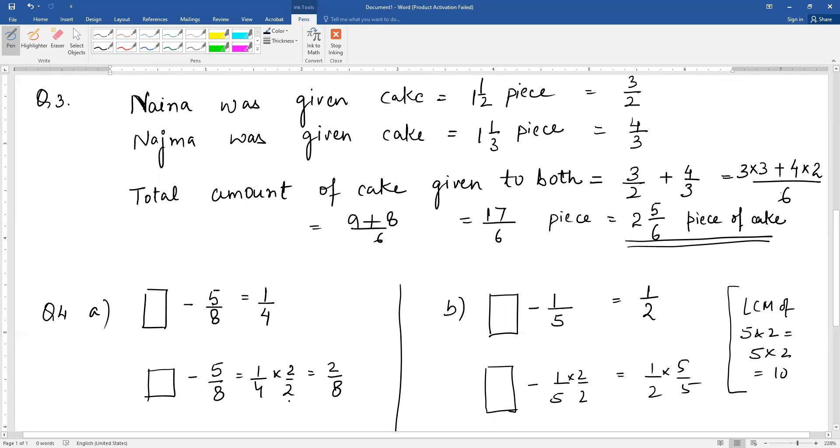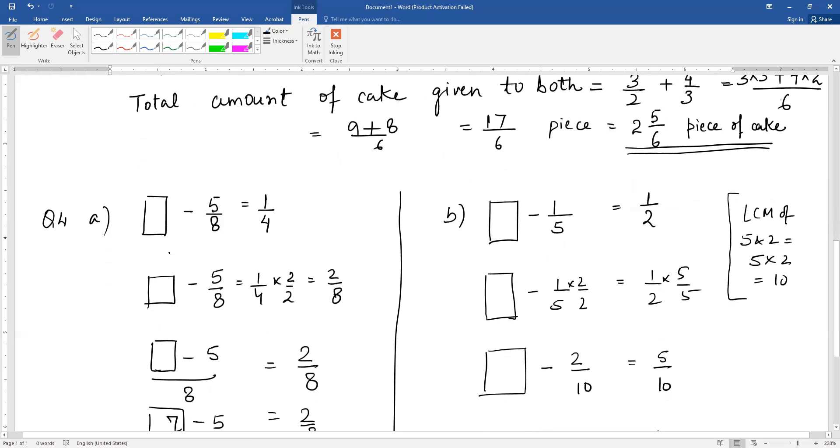We are just finding an equivalent fraction for one by four. One by four equivalent fraction is 2 by 8. Now our question is: what minus 5 by 8 gives 2 by 8?